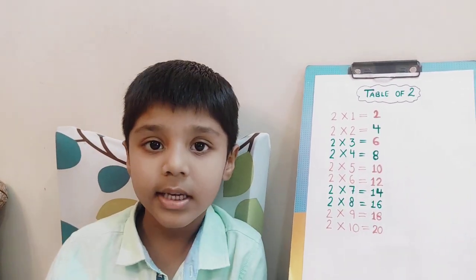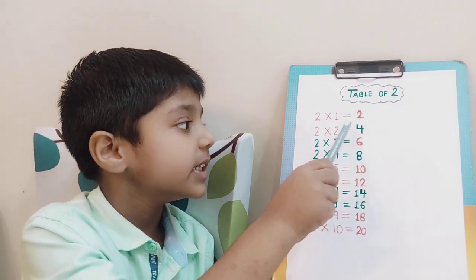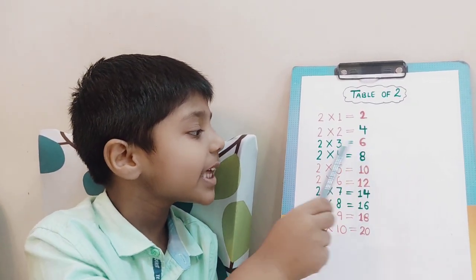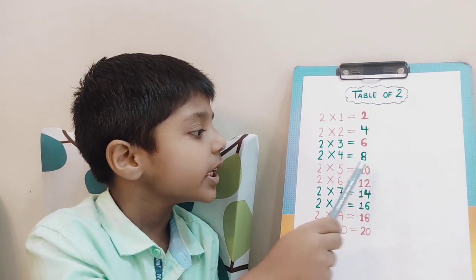Let's revise the table of 2. 2 ones are 2, 2 twos are 4, 2 threes are 6, 2 fours are 8.